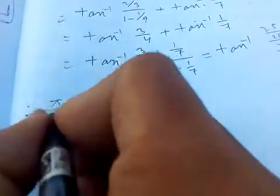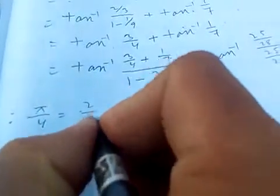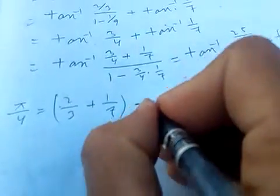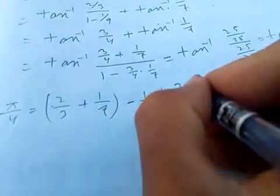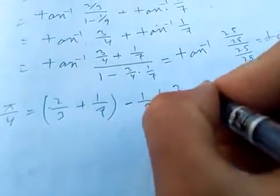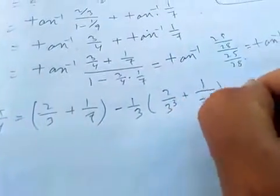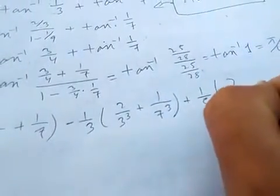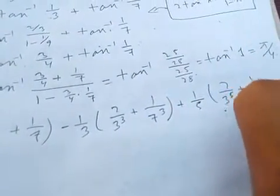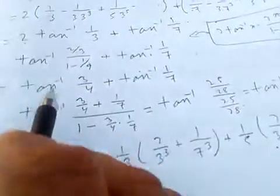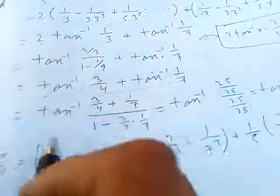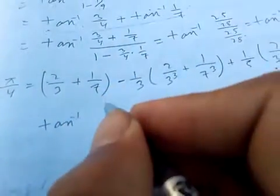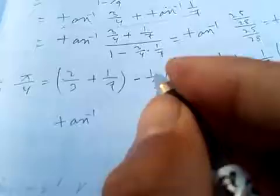Therefore, π/4 is equal to 2/3 + 1/7 minus (1/3)·(2/3) keep plus (1/7) keep plus (1/5)·(2/3) to the power five plus (1/7) to the power five minus one. This part uses the formula of the inverse trigonometric function.